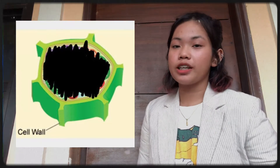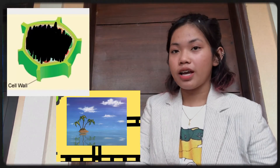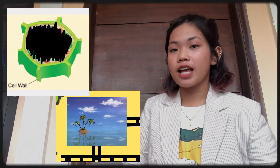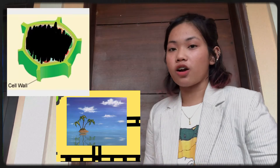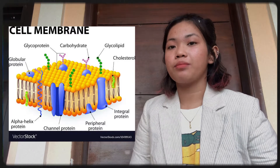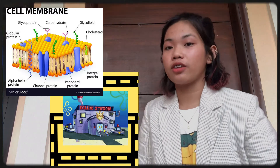Third is the cell wall. The cell wall in the city is the island above the Krusty Krab because it is the outer layer of the Krusty Krab and it is the one that protects the whole Krusty Krab. The cell wall is the protective, semi-permeable outer layer of the cell. Fourth is the cell membrane. The cell membrane in the Bikini Bottom is the police station because they are the ones who control what goes inside and outside.